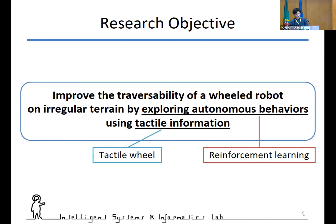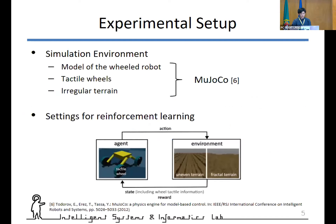For autonomous behavior generation, we adopted reinforcement learning. Here I describe the experimental setup. The first part is the simulation environment, and the second part is about settings for reinforcement learning. All simulation was done using the physics engine called MuJoCo.